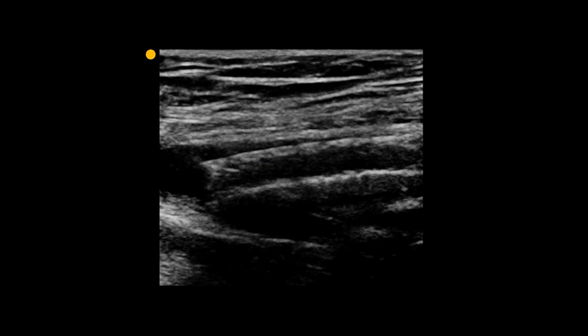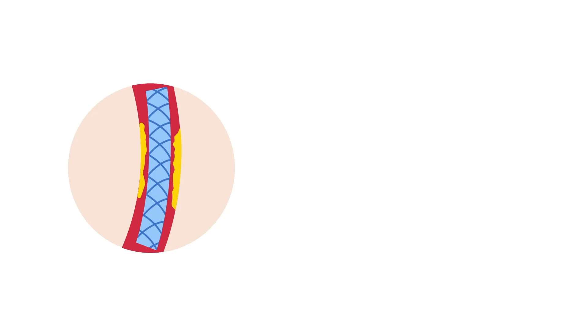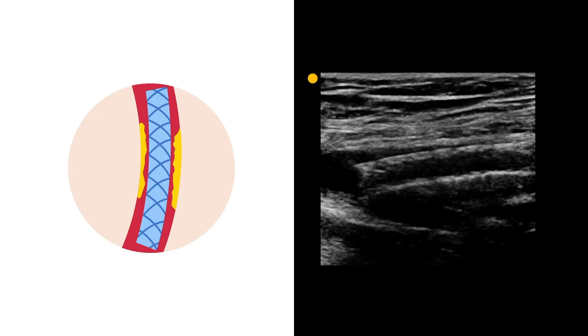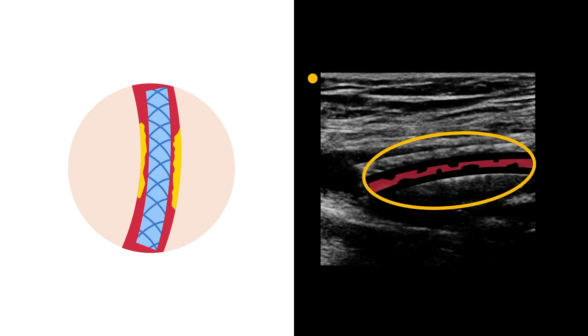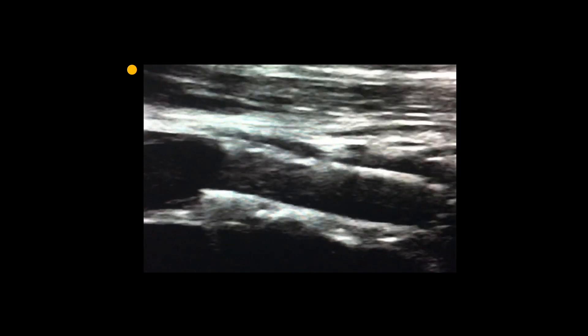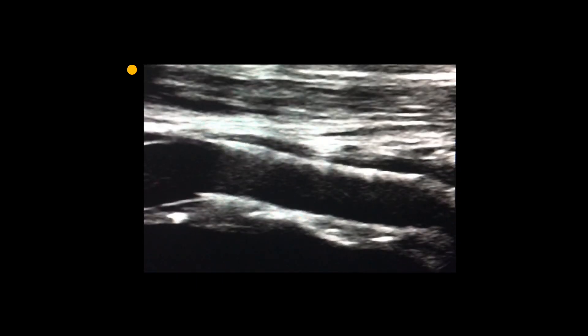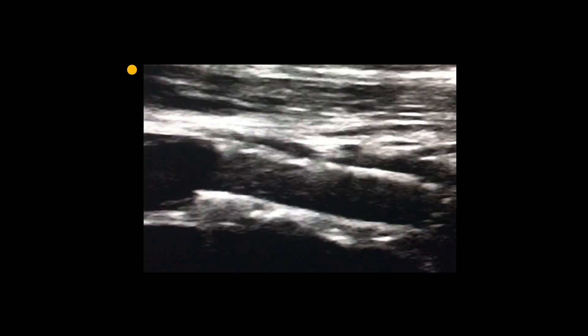Here is a stent in the SFA. Notice its bright, echogenic borders. Stents are most easily recognized at the proximal attachment. Occasionally, they can be difficult to evaluate for both presence and patency due to the calcific shadow from atherosclerotic plaque pushed up against the walls. When off-axis, you can usually recognize a stent by identifying the mesh pattern.